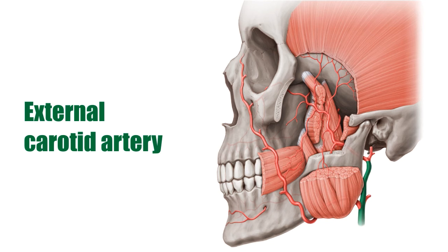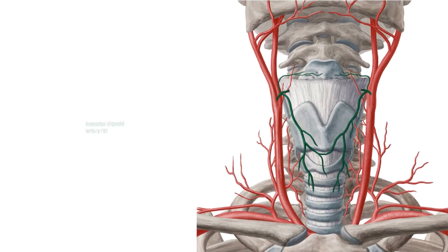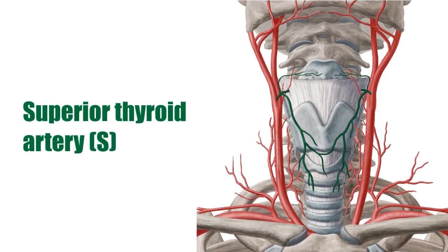The first branch of the external carotid artery is the superior thyroid artery, which supplies the superior portion of the thyroid gland, the infrahyoid muscles, and the sternocleidomastoid. The superior thyroid artery branches into the superior laryngeal branch and the sternocleidomastoid branch, supplying the larynx and the sternocleidomastoid muscle respectively.